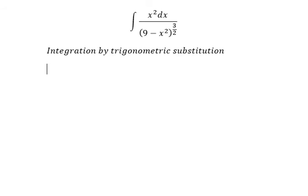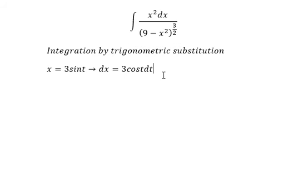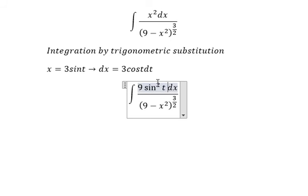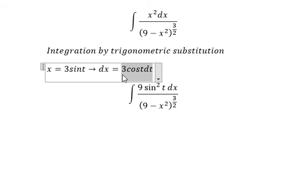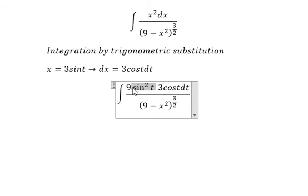So we will let s equal to 3 sin(t), which gives us ds equal to 3 cos(t) dt. For s squared, we get 9 sin²(t). So dx changes to 3 cos(t) dt, and x squared changes to 9 sin²(t).